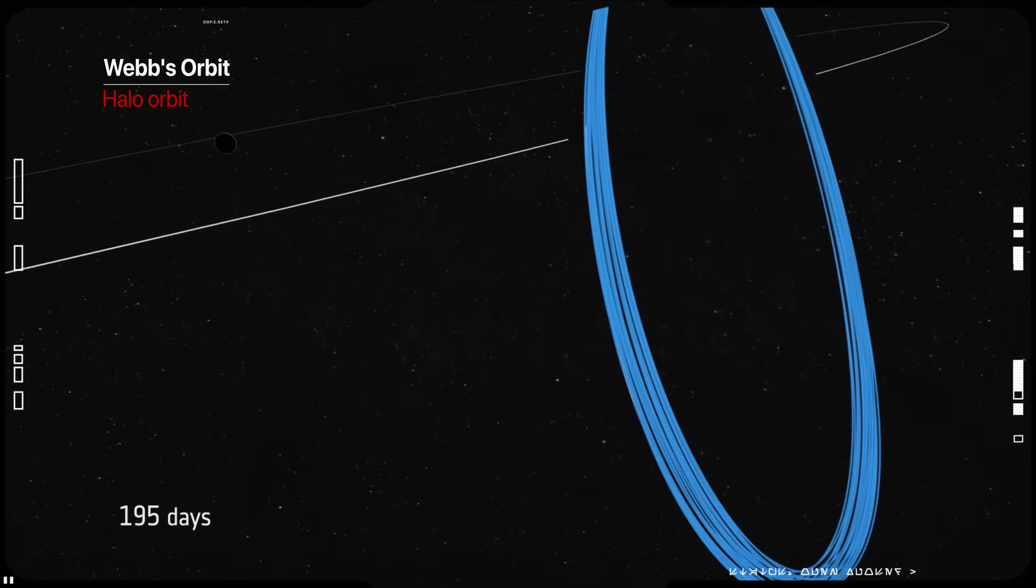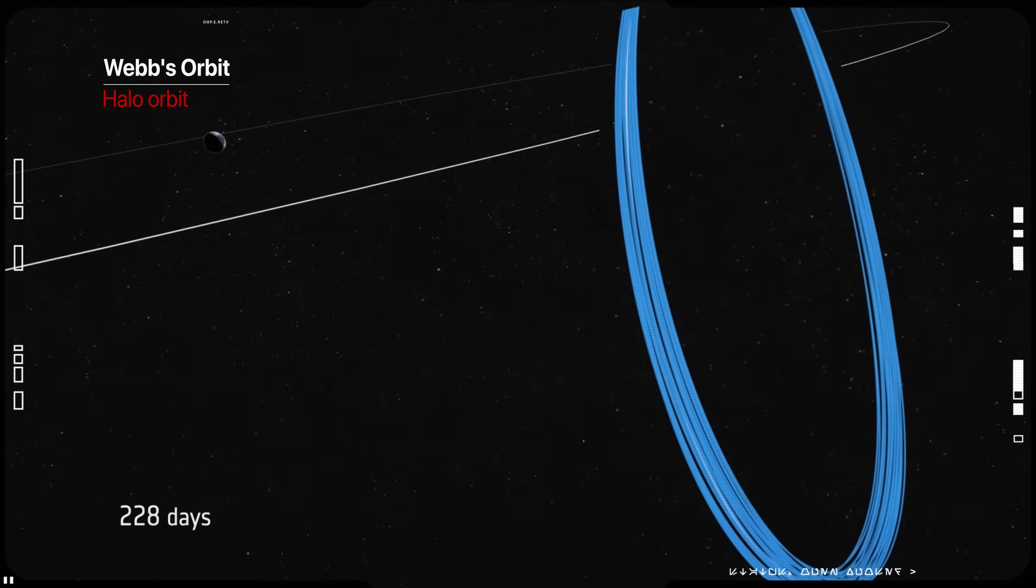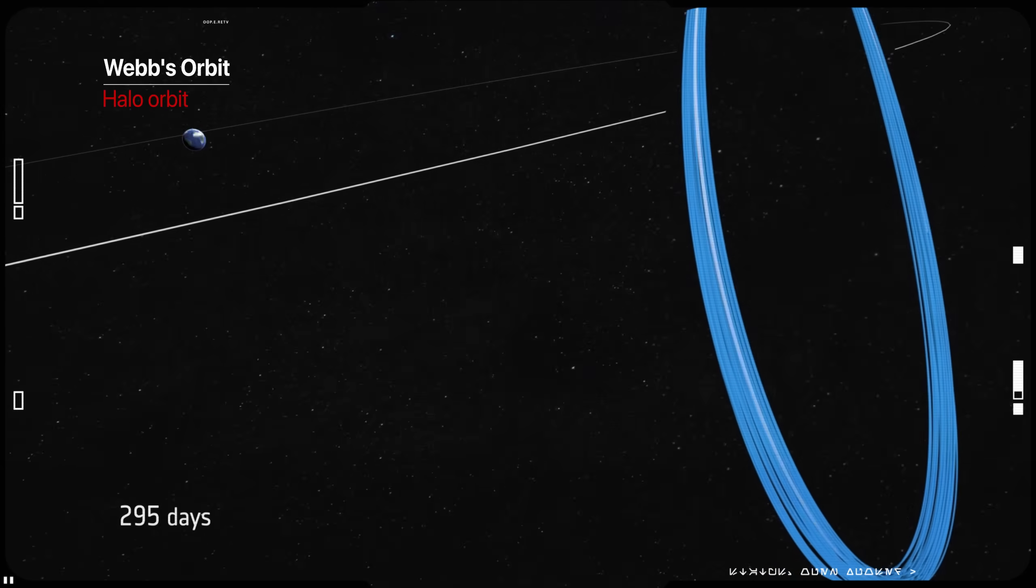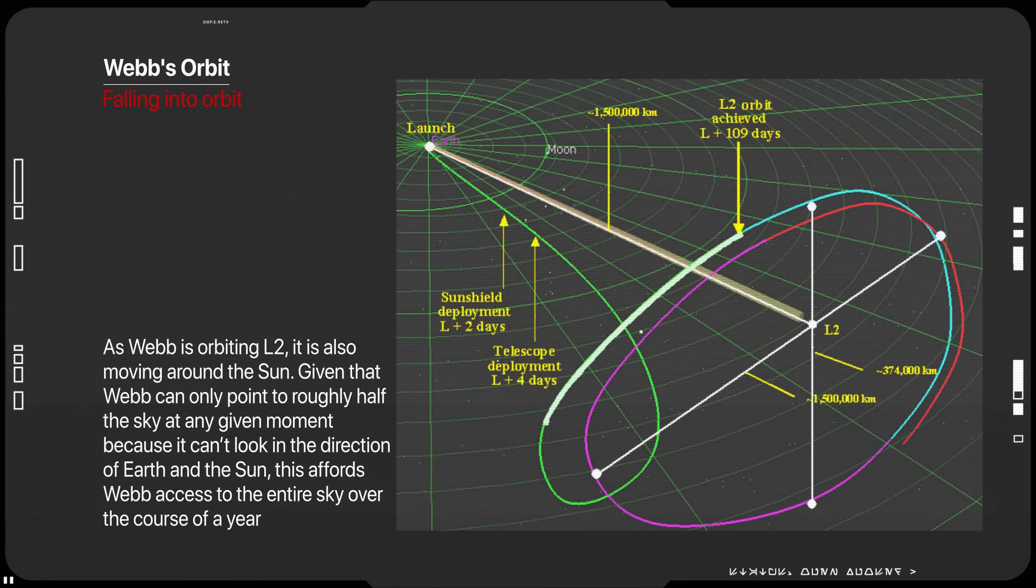The freedom in L2 orbit design allows for multiple launch opportunities for most months and minimizes the velocity needed to get to orbit. A trajectory can be fashioned so that the telescope falls into orbit about L2 rather than having to forcibly inject itself into a set orbit using its propulsion subsystem. This saves propellant and makes for simpler orbit maintenance.